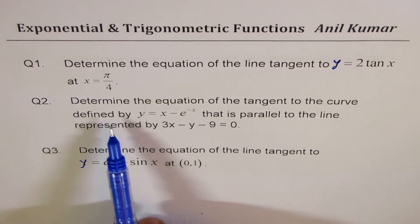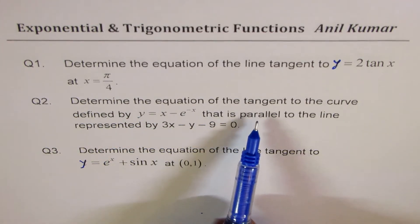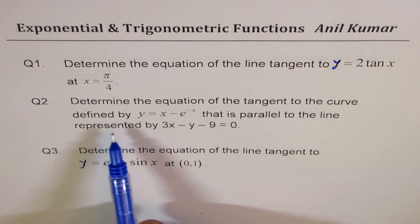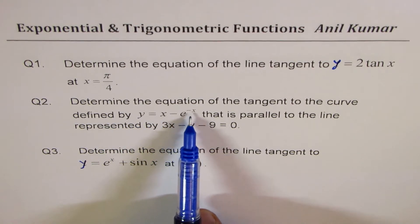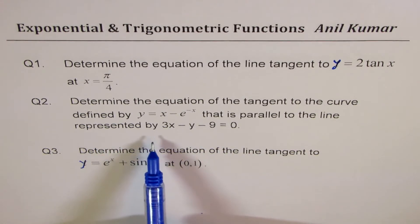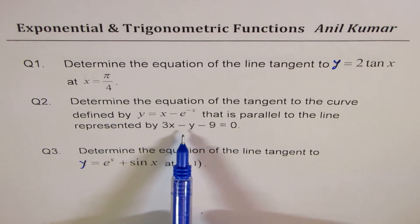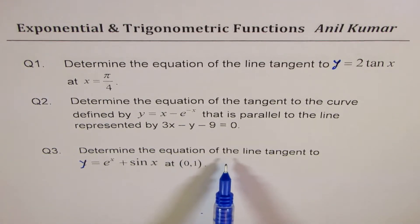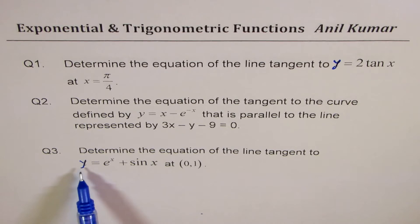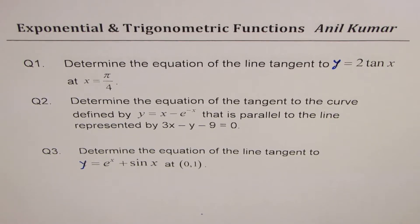Question number two: Determine the equation of the tangent to the curve defined by y equals x minus e to the power of minus x, that is parallel to the line represented by 3x minus y minus 9 equals 0. And question number three: Determine the equation of the line tangent to y equals e to the power of x plus sin x at (0, 1). So let's solve them one by one.